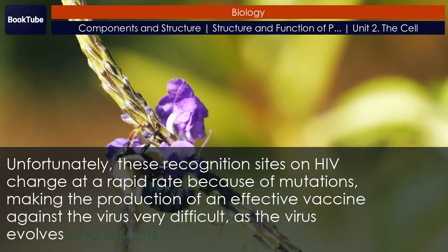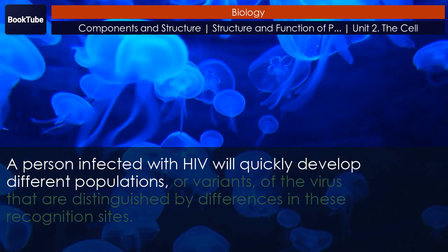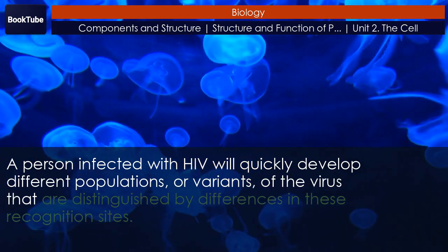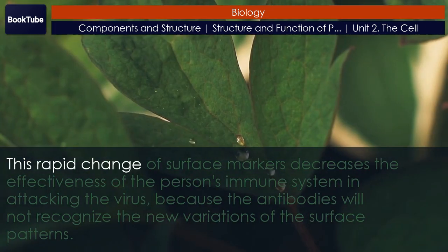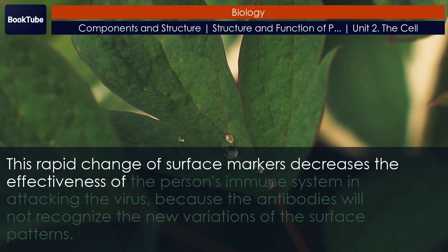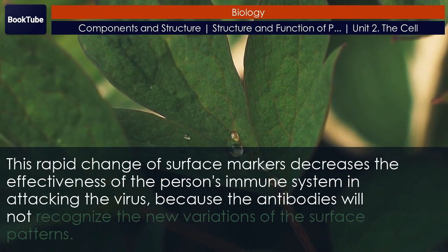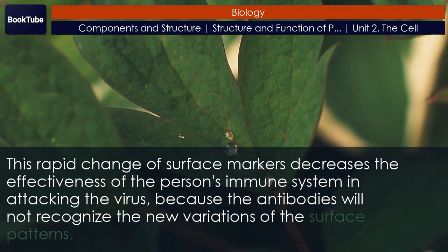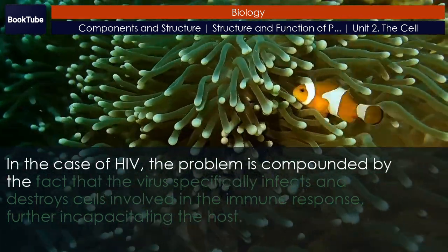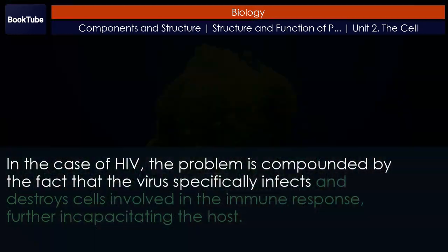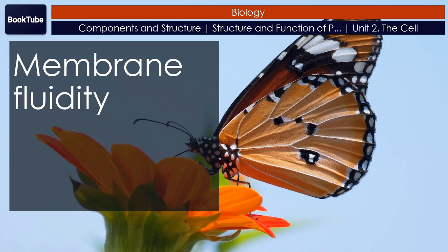As the virus evolves and adapts, a person infected with HIV will quickly develop different populations or variants of the virus distinguished by differences in these recognition sites. This rapid change of surface markers decreases the effectiveness of the person's immune system in attacking the virus because the antibodies will not recognize the new variations of the surface patterns. The problem is compounded by the fact that the virus specifically infects and destroys cells involved in the immune response, further incapacitating the host.